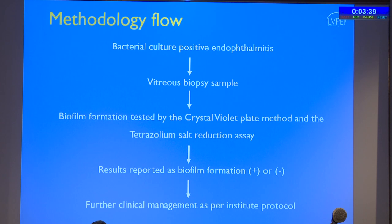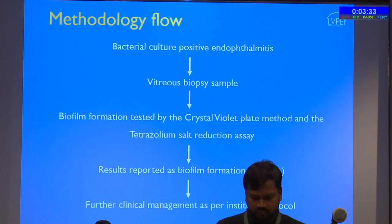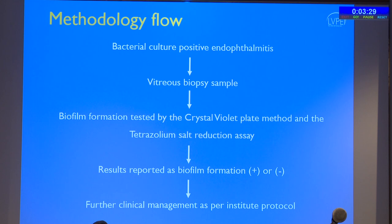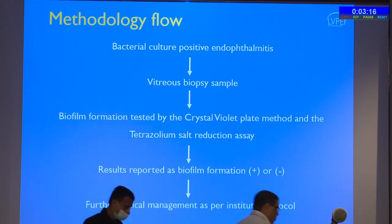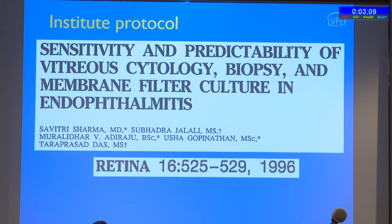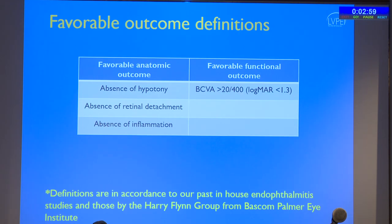Fungal etiology was excluded because preliminary baseline work at our institute showed that demonstration of biofilm formation in fungi is not very easy, is time-consuming, and may not yield reproducible results. All bacterial culture-positive endophthalmitis cases had their vitreous biopsy sample taken. Biofilm formation was tested in vitro by standard techniques: the crystal violet plate method and the tetrazolium salt reduction assay. Results are reported as biofilm formation positive or negative, obtained within 48 to 72 hours.